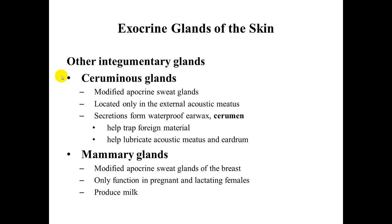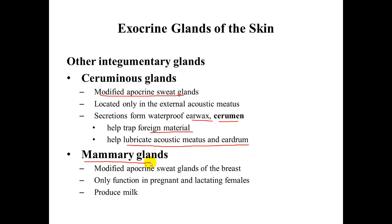Two other glands worth mentioning are the ceruminous glands and mammary glands. Ceruminous glands are modified apocrine sweat glands that produce cerumen — earwax — which functions to trap foreign material and lubricate the acoustic meatus and eardrum. Mammary glands are also modified apocrine sweat glands found in breast tissue, functioning only in pregnant and lactating females to produce milk for the nursing infant.